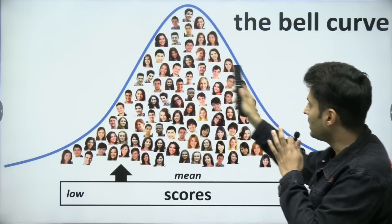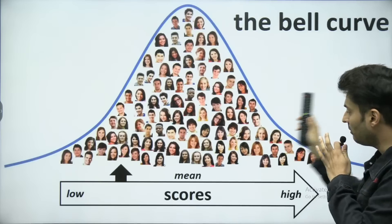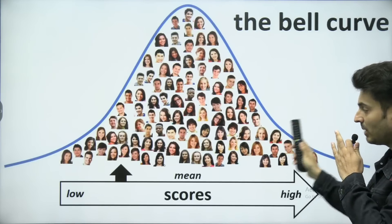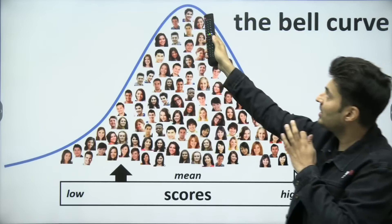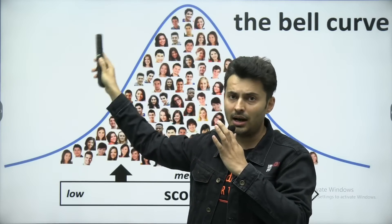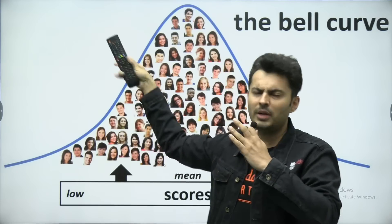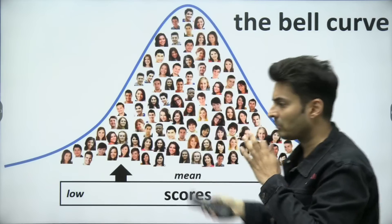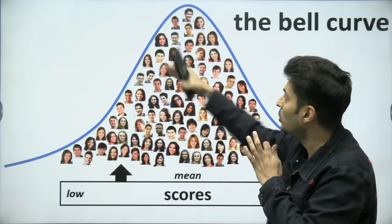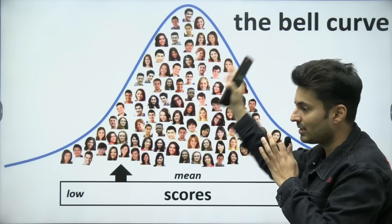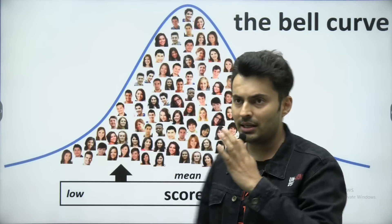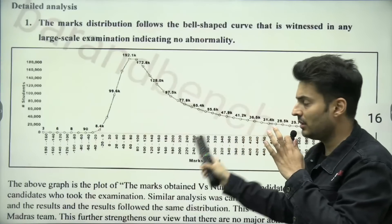If this graph is tilted or shifted very unusually towards the high score, that means the paper was very easy. If the peak shifts the other way, the paper was very hard or the competition was hard. And if the graph has two peaks or some abnormal shape, that means some issue was there. And that's what IIT Madras investigated.